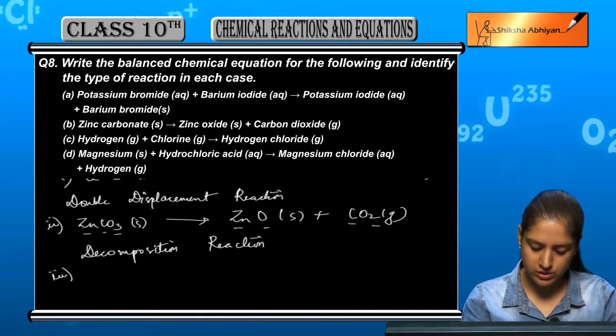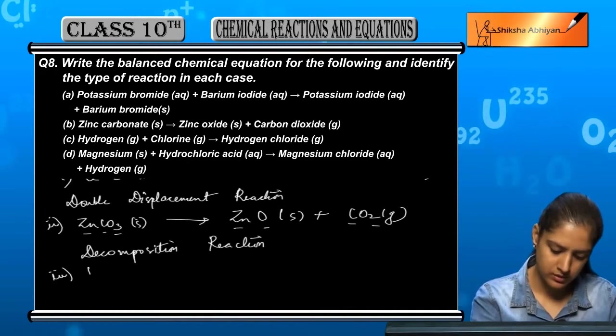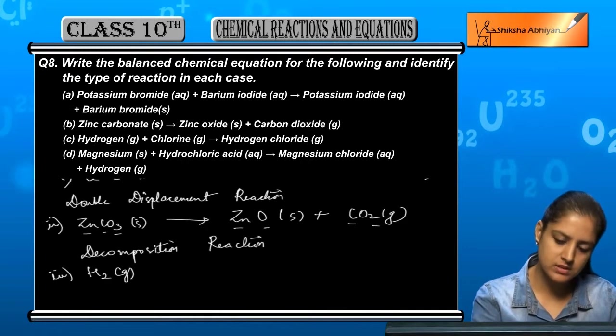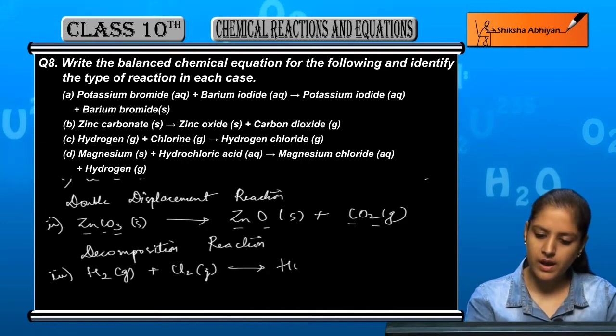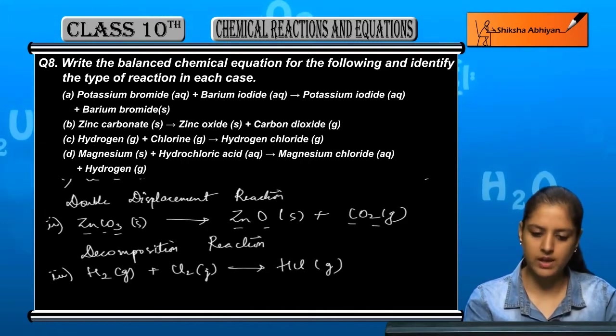Next, hydrogen plus chlorine, which is H2 gas plus chlorine Cl2 gas, gives us hydrogen chloride, HCl gas.